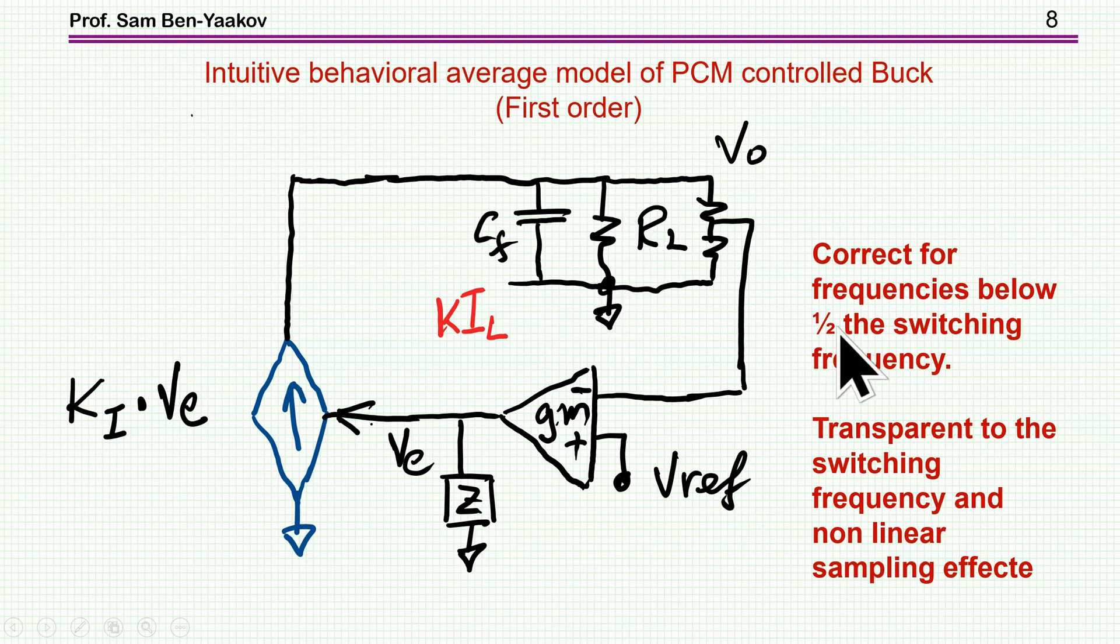Now, a couple of warnings here. This model, being an average model, is correct for frequencies below half the switching frequency, this is the Nyquist sampling criteria. But in fact, it is correct for say one-fifth of the switching frequency. And also, one should be aware that this model is totally transparent to the switching frequency and nonlinear sampling effect, because we have a sampled system. And as you approach the switching frequency, you may have some nonlinear effects, instabilities, which you cannot see here.